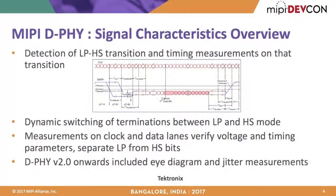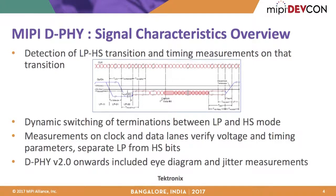Starting with a brief overview of D-PHY signal characteristics: D-PHY supports two types of transmission — low power/low speed and high speed. It has a data lane and a clock lane. When transmitting high-speed data, it transitions from low power mode to high speed mode, known as the LP-HS transition, passing through states LP 11, LP 01, and LP 00, then settling into high-speed transmission. D-PHY uses a forward clocking mechanism, so both clock and data take the LP-to-HS transition concurrently.